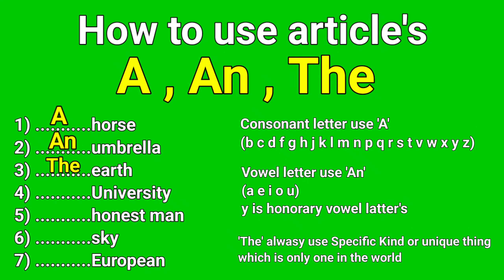Question number four: blank university. The starting letter 'u' is a vowel letter, but it pronounces as a consonant sound — like 'y' in 'you.' So you use 'a university.' Question number five: blank honest man. The starting letter is 'h,' but 'h' is silent here, so it pronounces as a vowel sound. So you use 'an.' The answer is 'an honest man.'